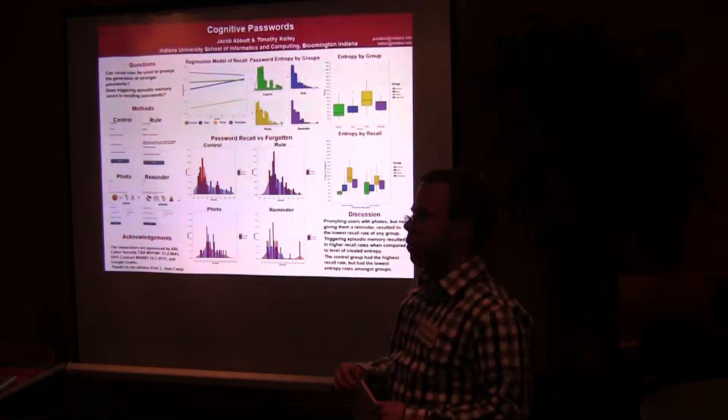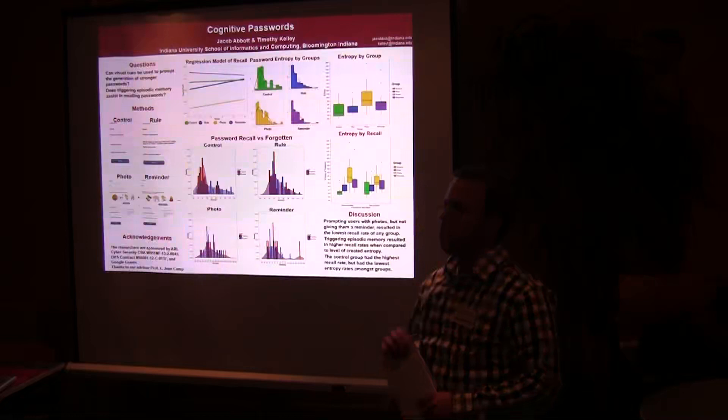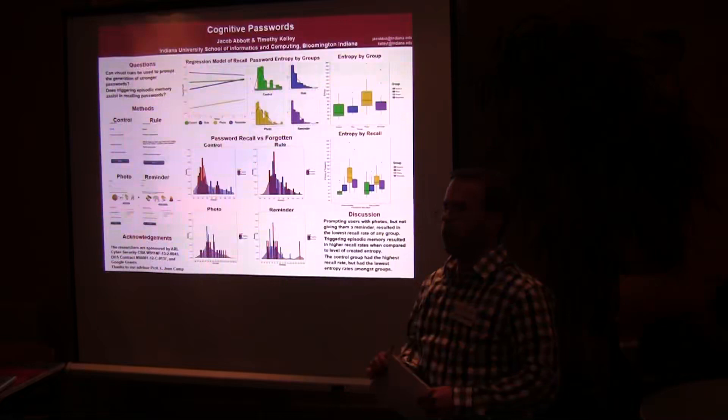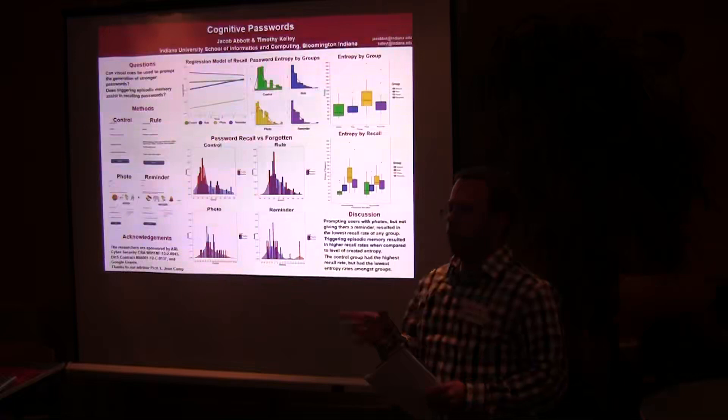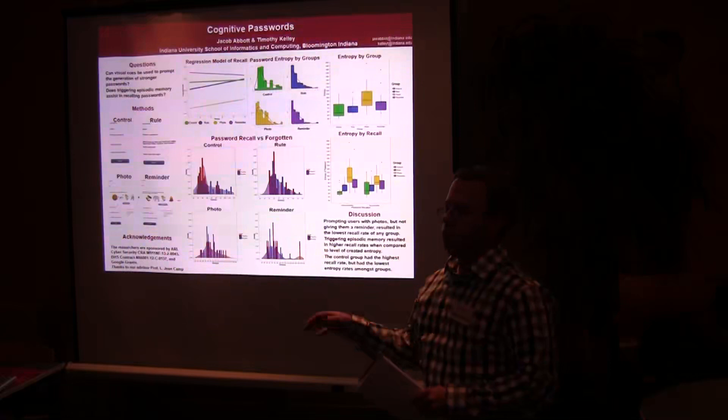Because that might explain why the entropy went down with the reminder. From what I saw in the passwords, in the photo group, some of them actually did use all four images to write a small sentence basically. And actually two of them, I think, that had the highest entropy values that were actually recalled was from the photo group because they actually wrote down the same sentence.